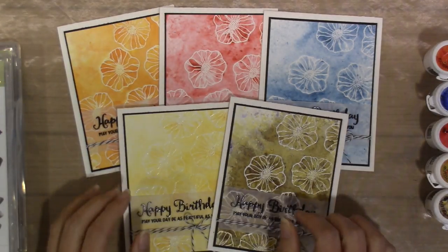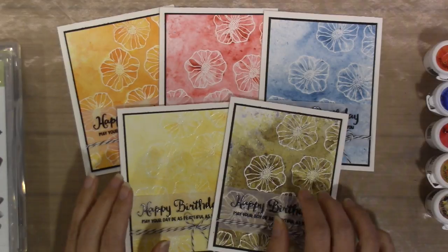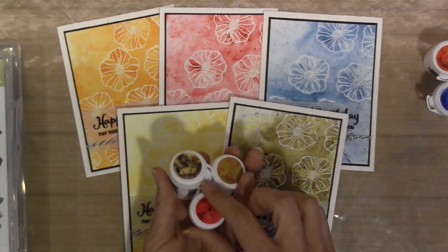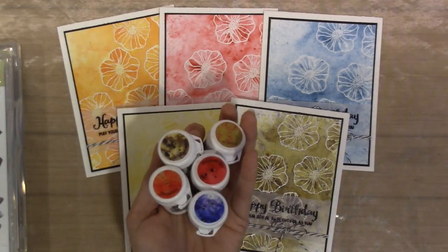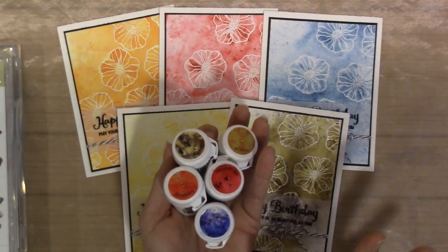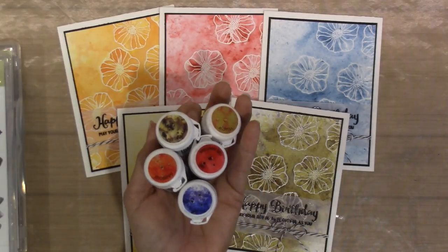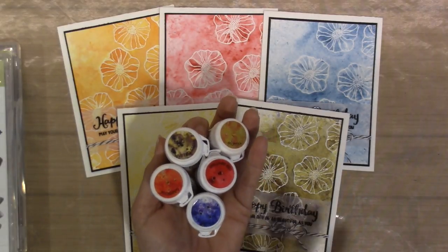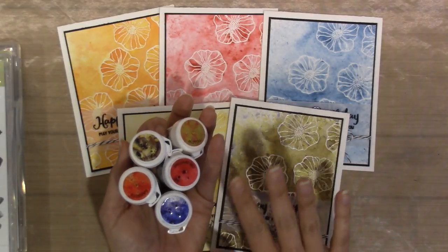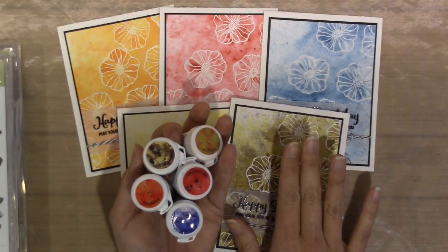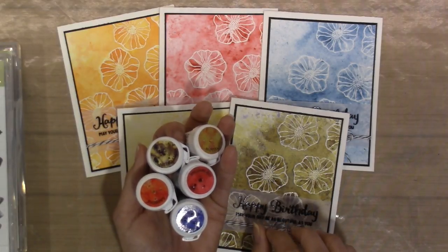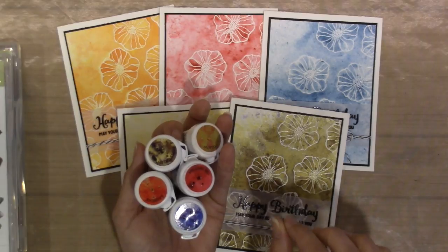So I finally sat down about a month ago and played around with the Brusho colors that came out in Stampin' Up's 2018 Occasions catalog. This is the first time I've ever played with them. I know they've been around for a while, but I have not had my hands on these until now. The one thing that I want to say before we even get started is these are super addicting to play around with, but there is a little bit of a learning curve as well.